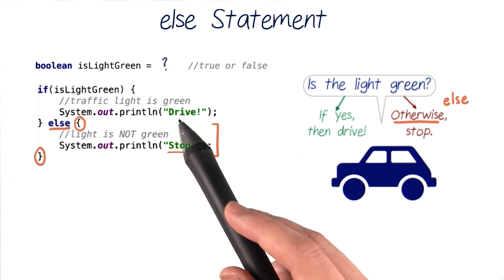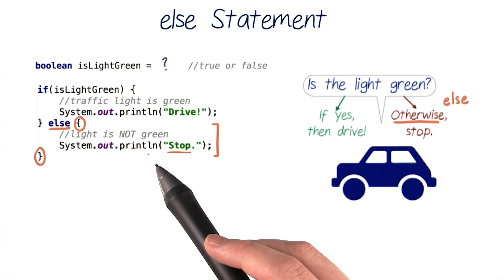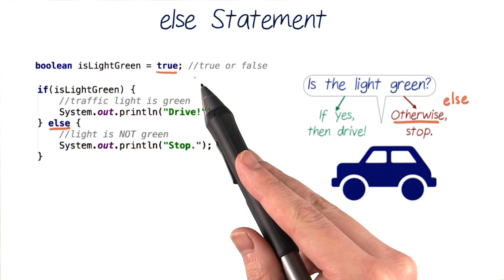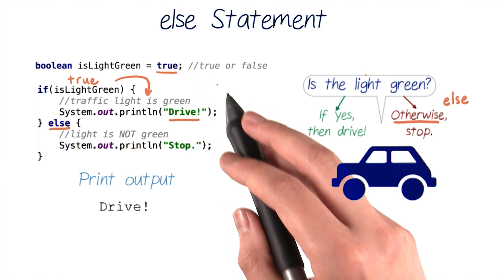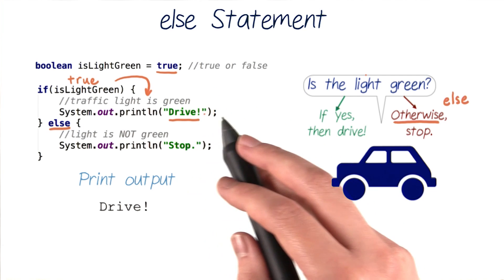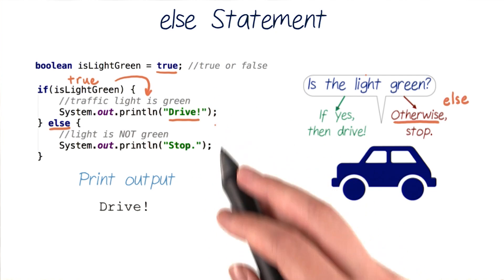And now, if the light is not green, we want our car to stop driving. So let's print out that action, stop, in the else. Now let's try this code out with assigned boolean values. If isLightGreen is true, our if test condition will be satisfied, and our code will print out drive.